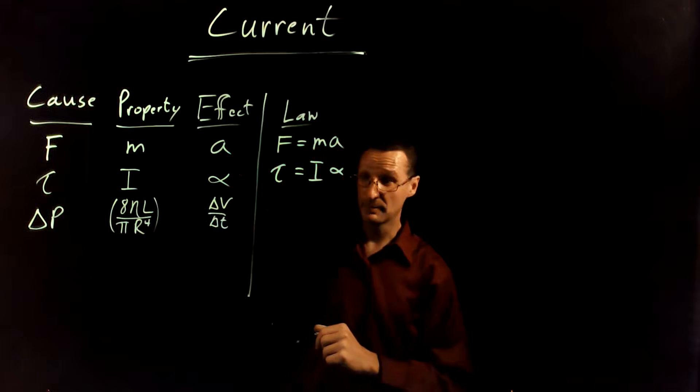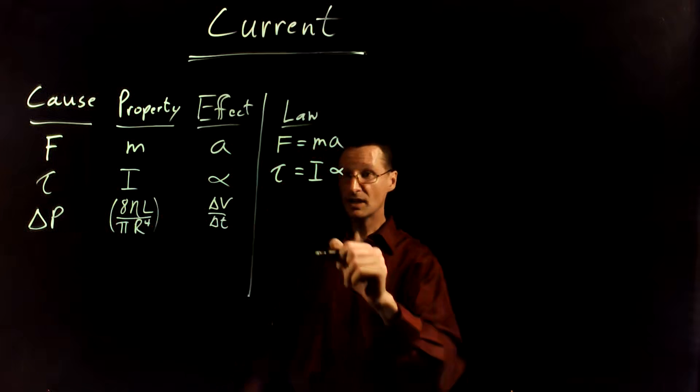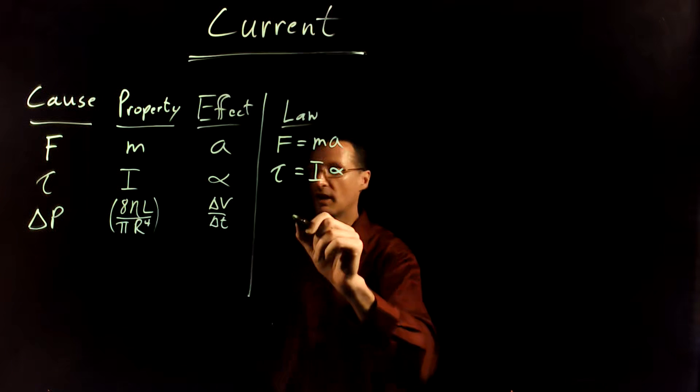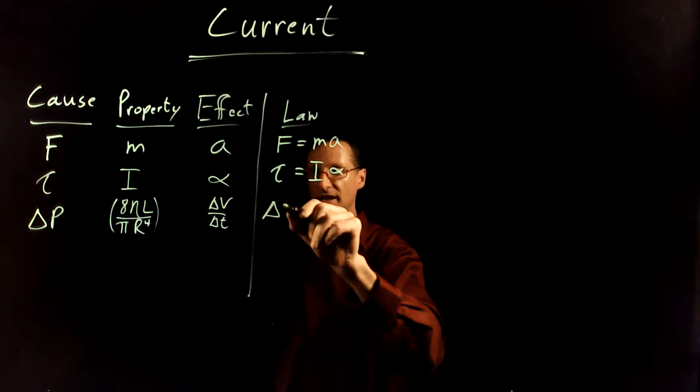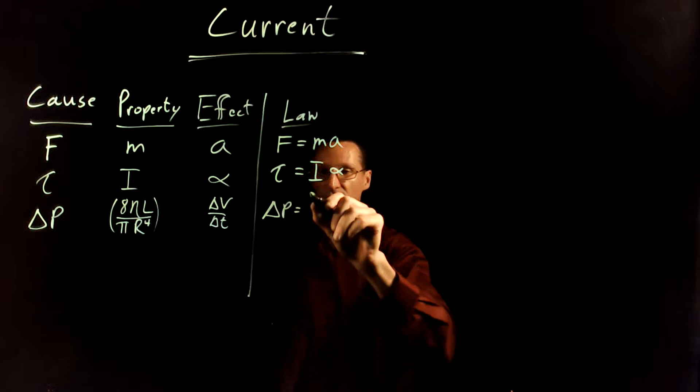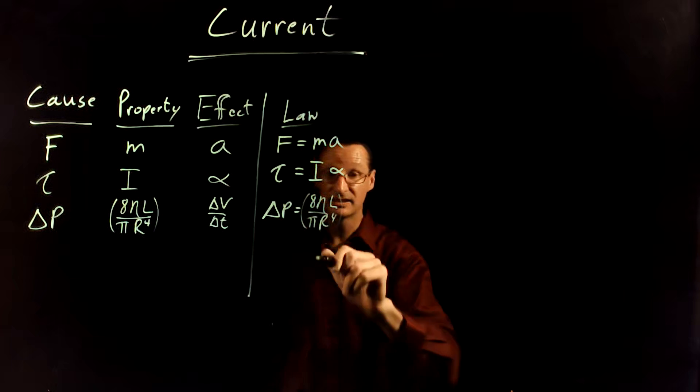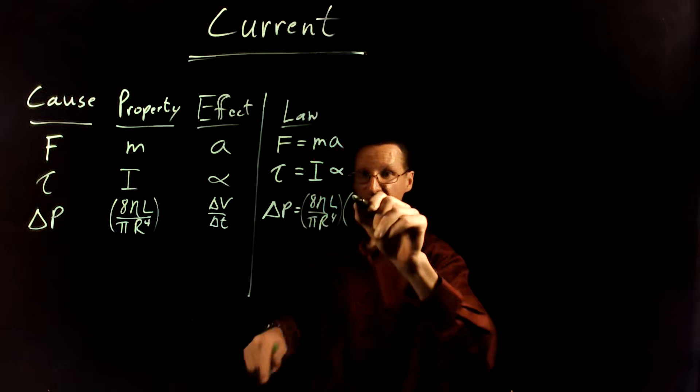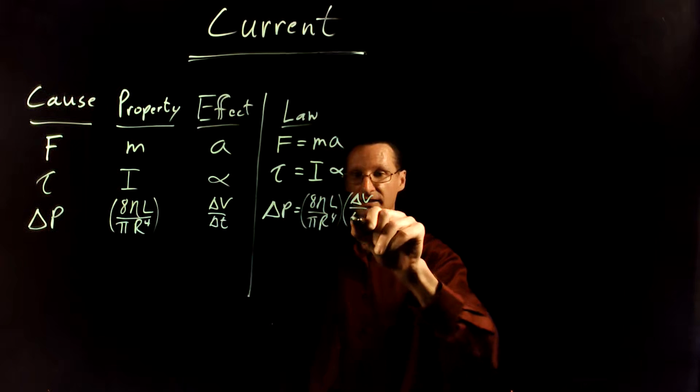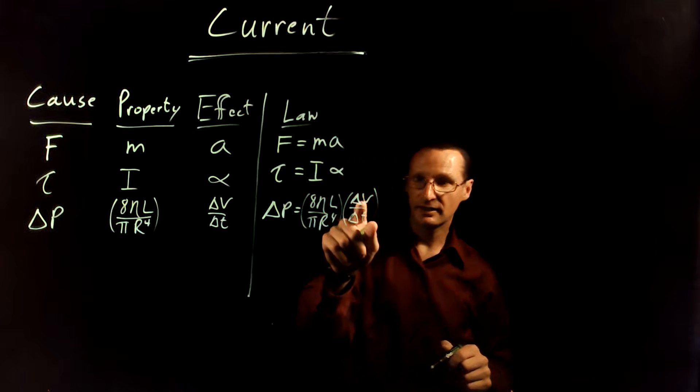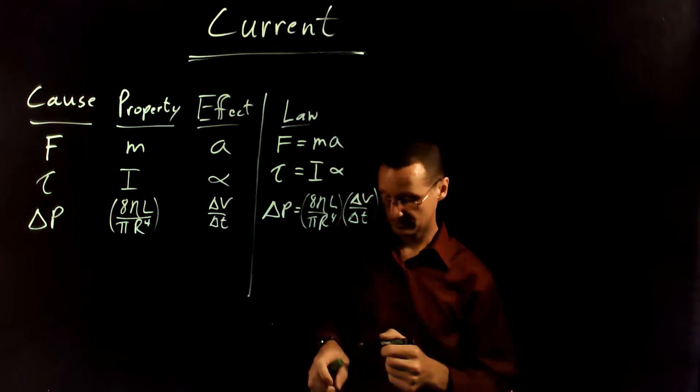That's the resistance of the pipe, and again we have a law between cause and effect: the pressure difference is equal to the property, 8 eta L over pi r to the fourth—that's the resistance—times the effect, which is the fluid flow rate, the volume flow rate, delta V, the amount of volume passing a point in a certain time.